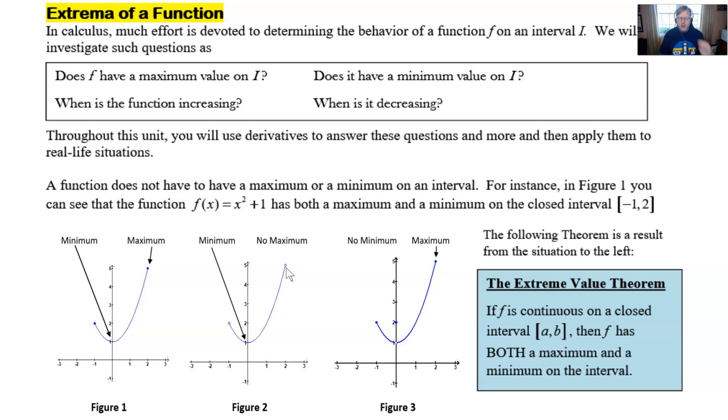likewise if we open up this bottom circle this vertex and say that the function is not defined there and then still go ahead and define it at the end points then we have a situation where we have a maximum but we do not have a minimum value because we can't get to a point that's the overall lowest point.